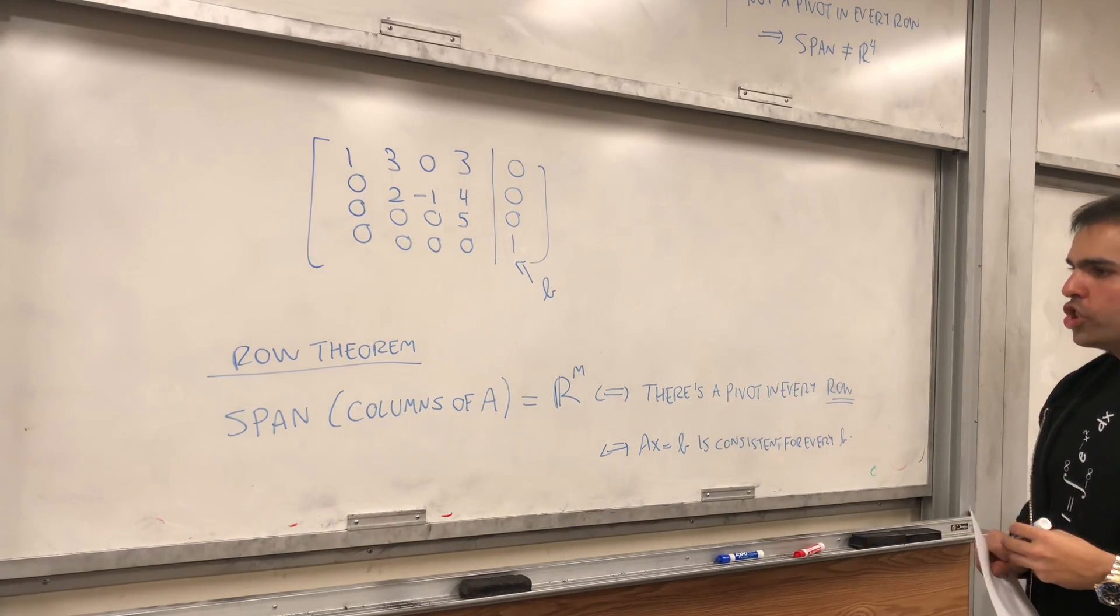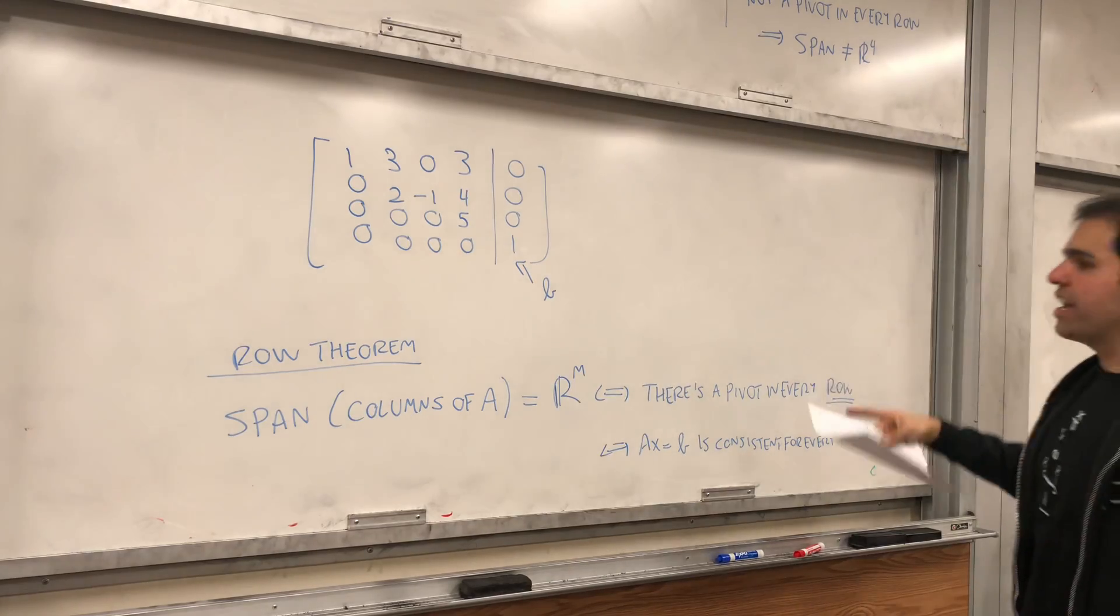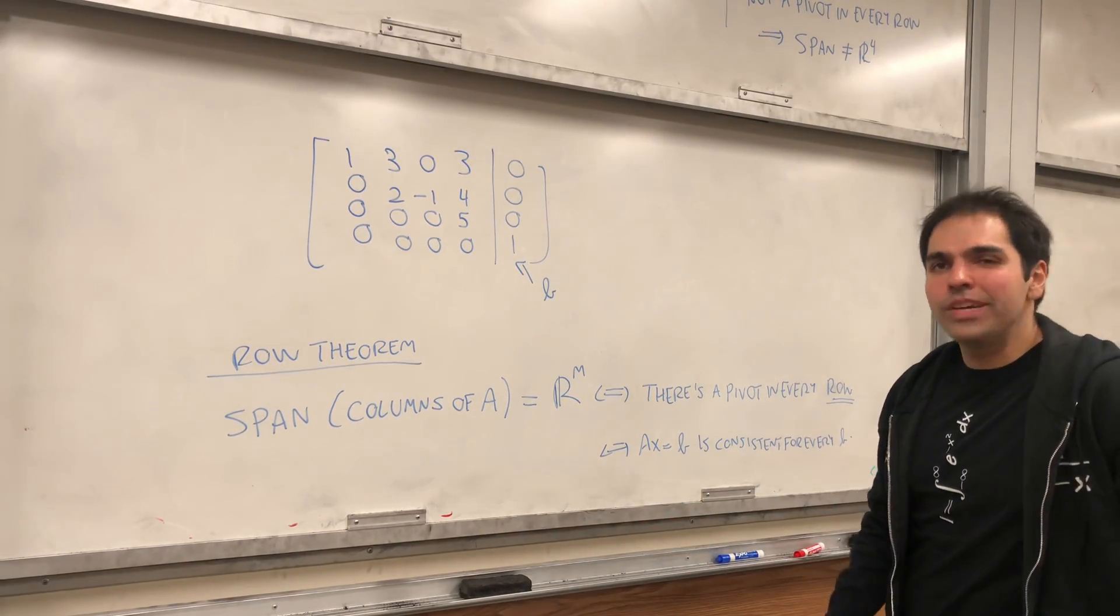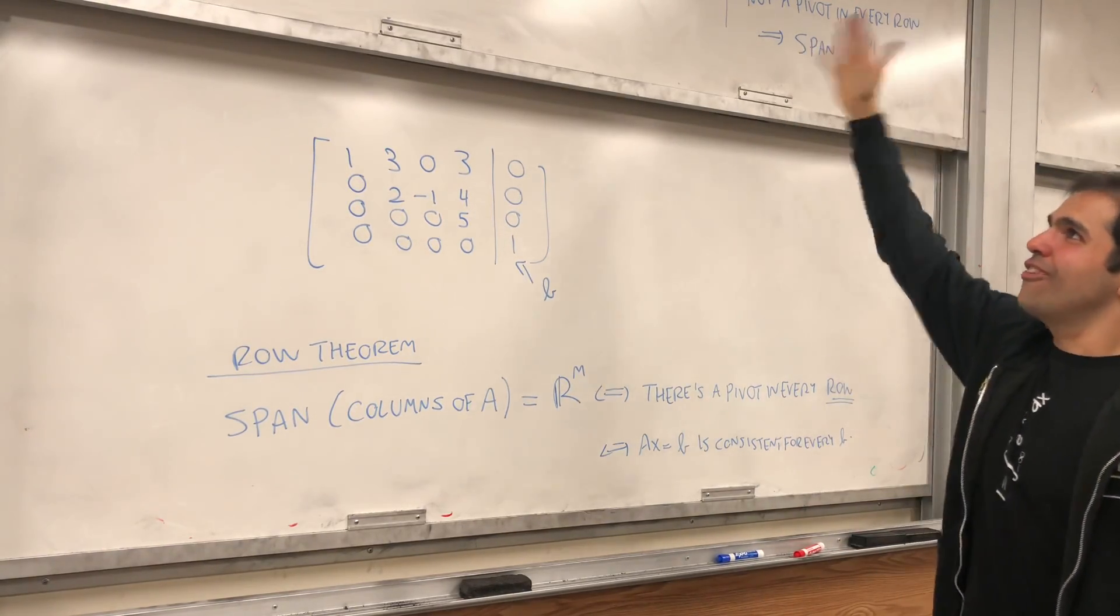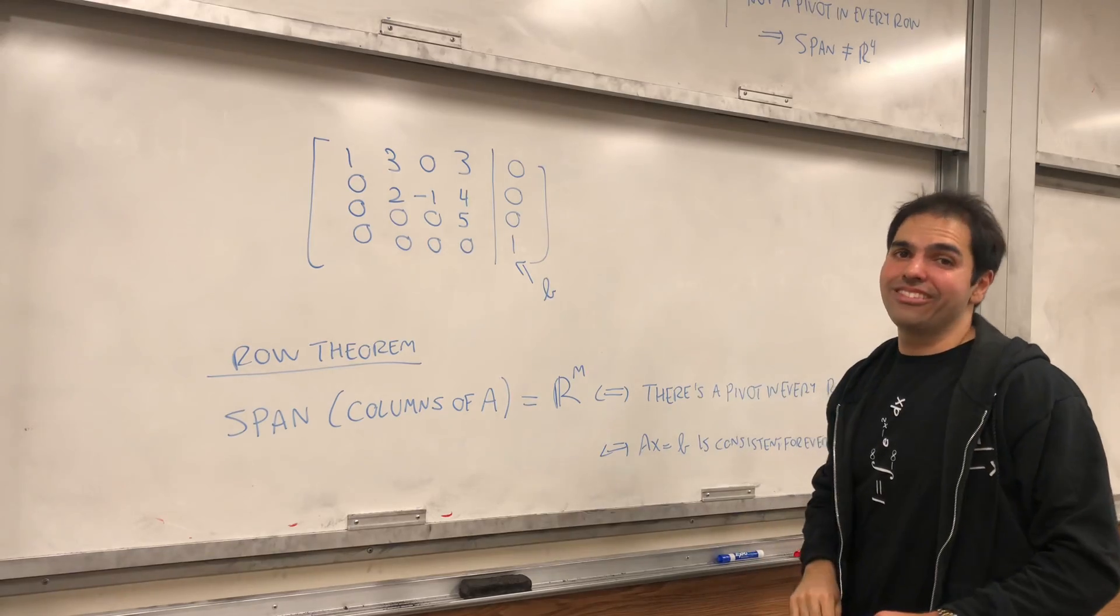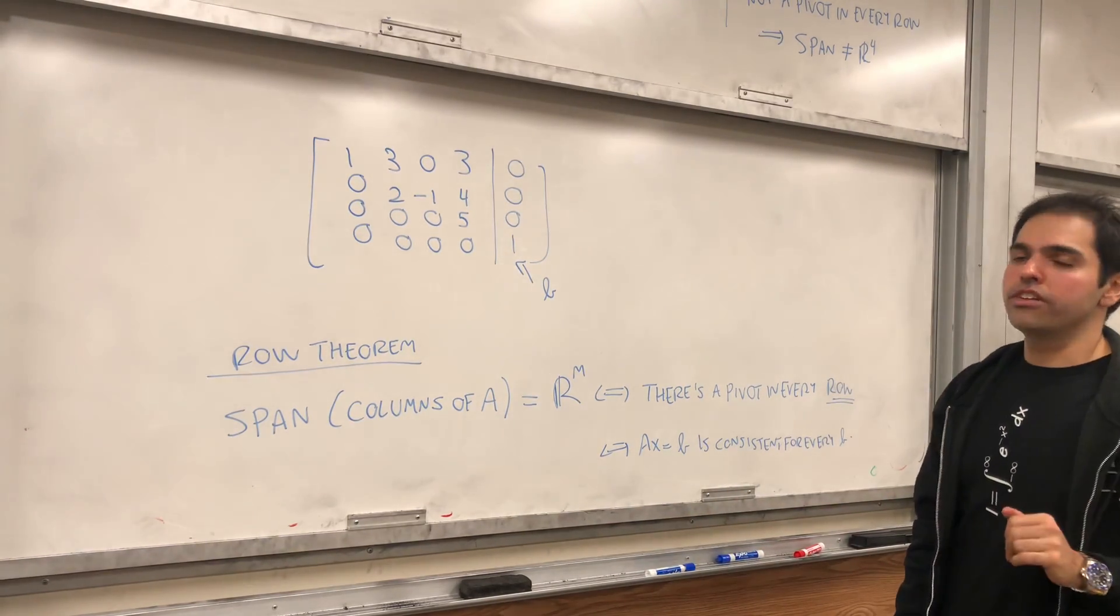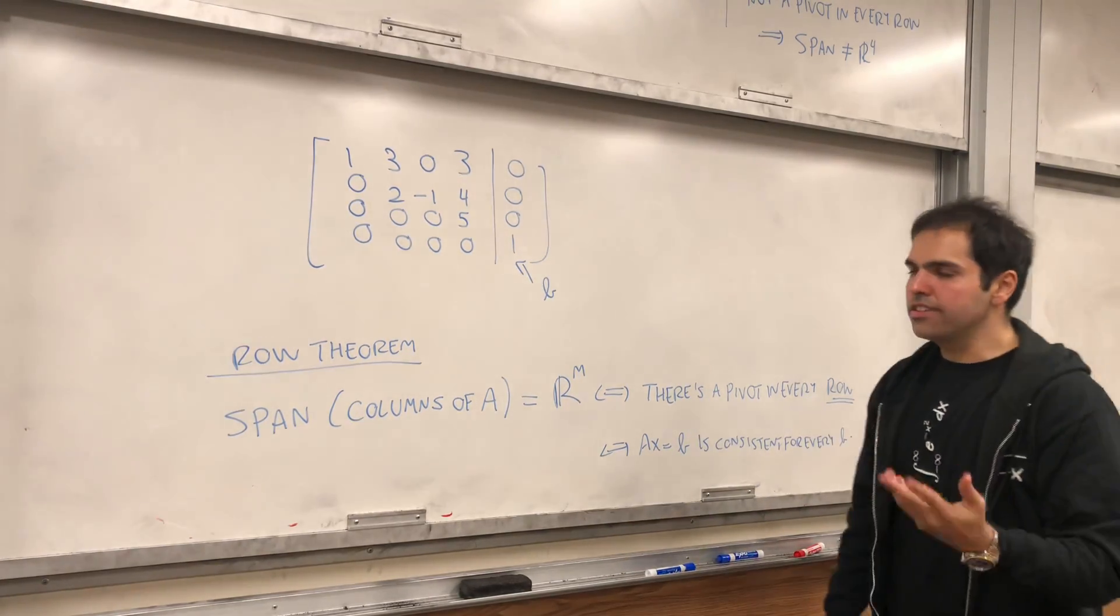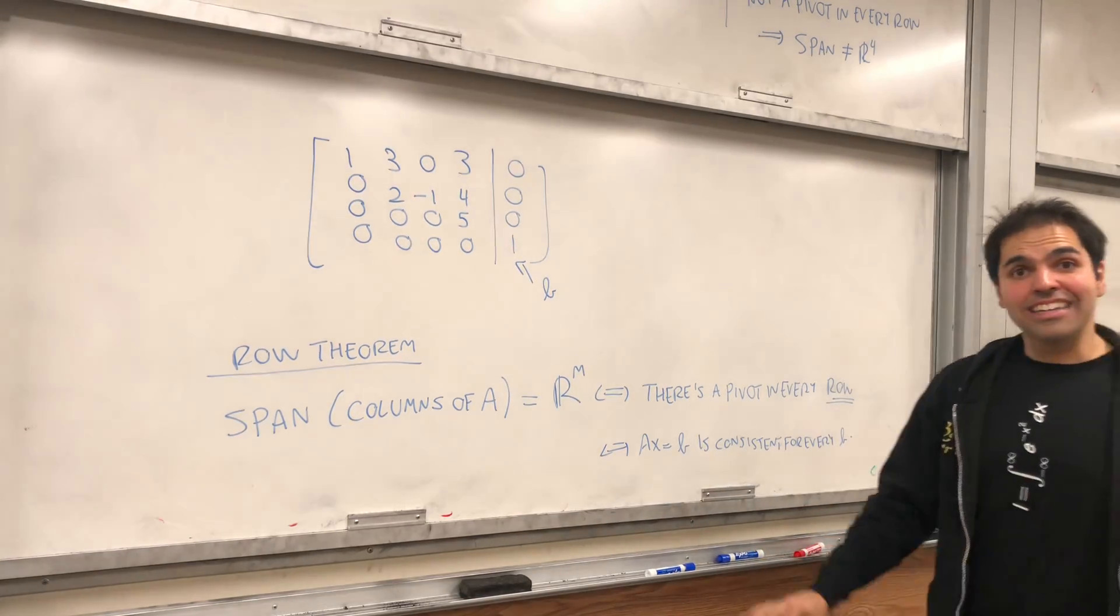So, in other words, to check that the span equals to the whole space, you just need to check that there's a pivot in every row. And I hope you agree that it's way easier than, you know, showing that for every b, this system has a solution. So, the point of this, pivots are important, in particular, if there's a pivot in every row, it means the span is the whole space.